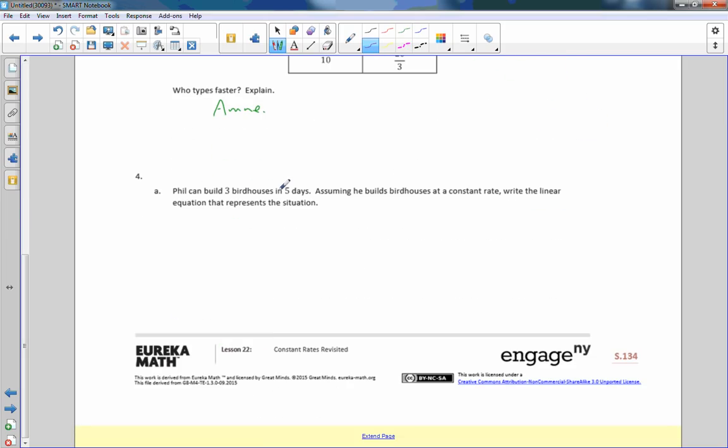Number four. Phil can build three birdhouses in five days. So three birdhouses in five days is birdhouses over time. Assuming he builds birdhouses at a constant rate. Write the linear equation that represents a situation. So now I want to set that equal to Y over X and ignore that C equals. And cross multiply. But now I'm going to do this differently this time because cross multiplying is two steps. And if I want to get Y by itself, all we have to do is multiply both sides by X and this cancels. And I get Y equals three fifths times X or simply three over five X. So there's my linear equation. Three birdhouses in five minutes. There's my linear equation.